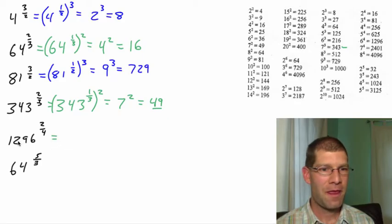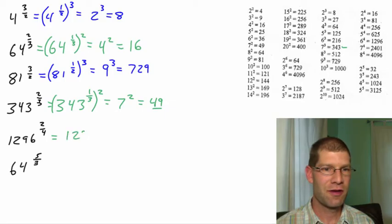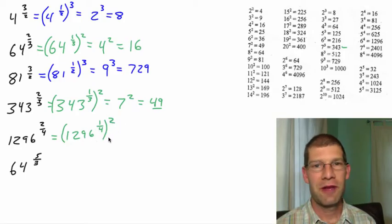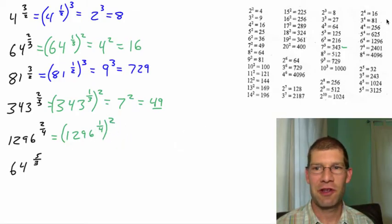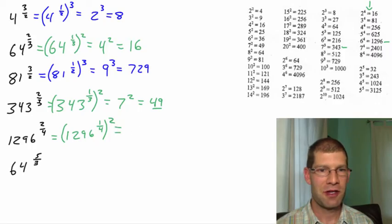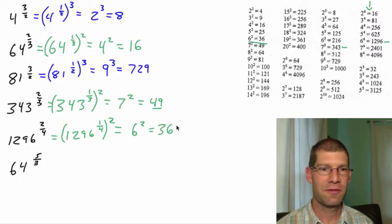The next one, 1296 to the 2 fourths. We'll do the fourth root first, and then we'll square it. So now we have to jump over to the far right on the index card. We're saying what to the fourth power. So we're here in our fourth power column. It's 1296. And that's 6. So this then becomes 6 squared, and 6 squared is 36.